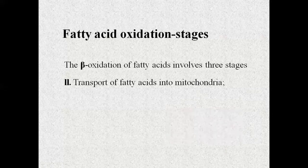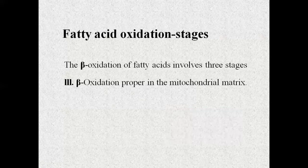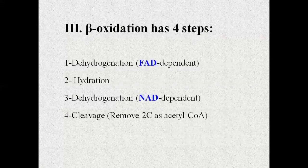So to summarize: the first step is activation, and the second step is transport via the special carnitine transport system into the mitochondrial matrix. Now the fatty acyl-CoA is inside the mitochondrial matrix. Beta-oxidation will now proceed. The mitochondrial matrix contains the enzymes required for the oxidation of fatty acids.